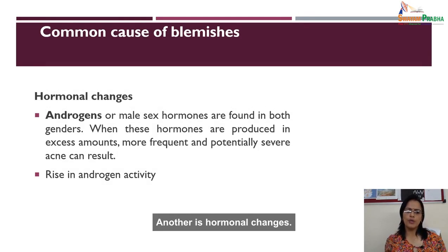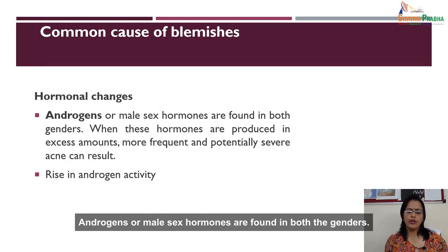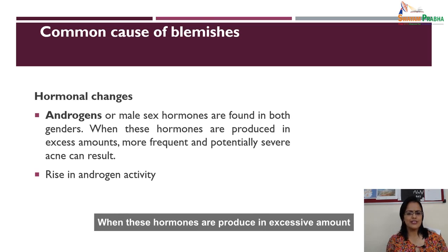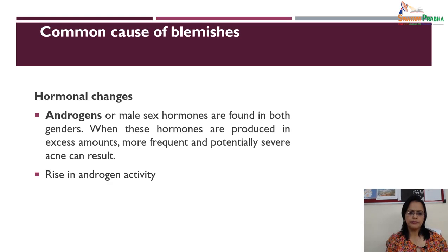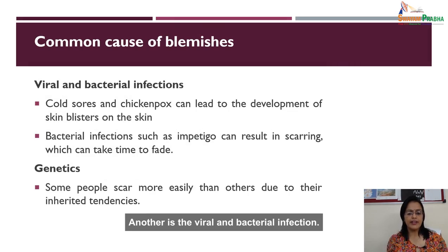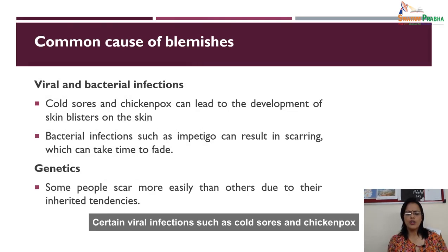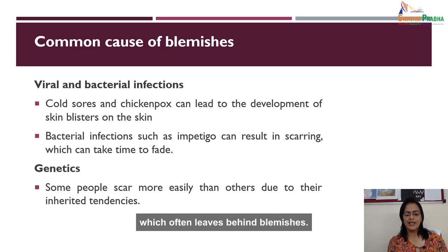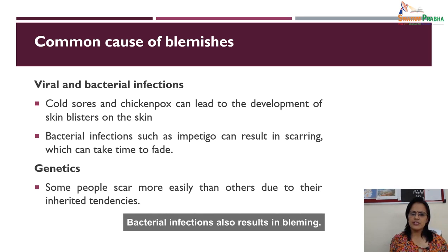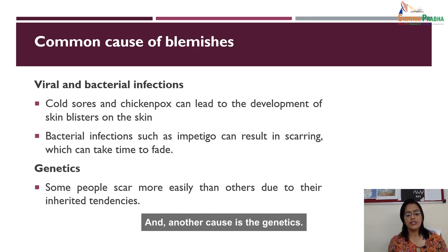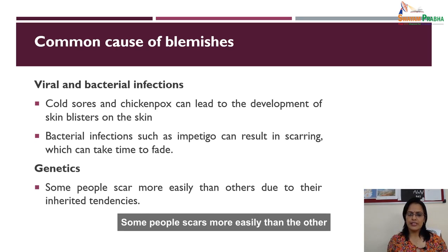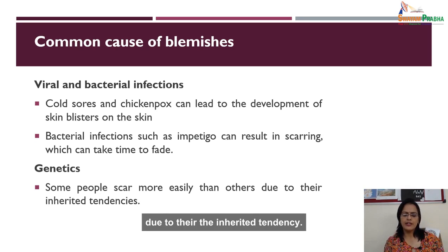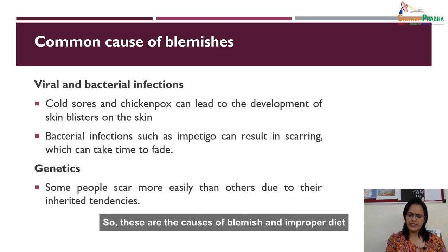Hormonal changes are another cause: androgens, or male sex hormones, are found in both genders. When produced in excessive amounts, they lead to more frequent and potentially severe acne. Viral and bacterial infections such as cold sores and chickenpox can cause blisters on the skin that often leave behind blemishes. Bacterial infections also result in blemishes. Genetics is another cause: some people scar more easily than others due to inherited tendency.